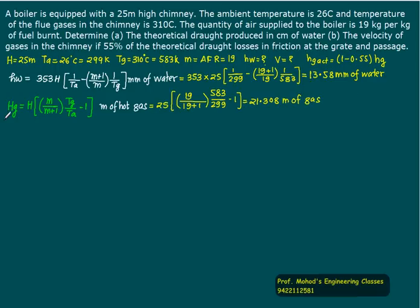Similarly, we can calculate the column of gas. H is 25, m is 19/(19+1), Tg is 583, Ta is 299.